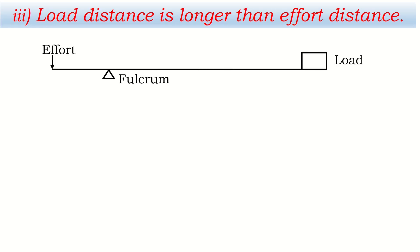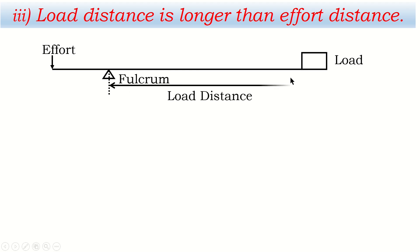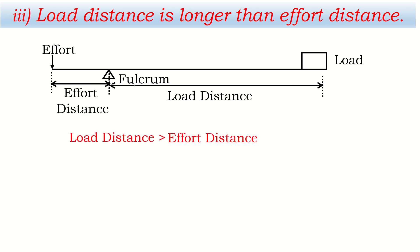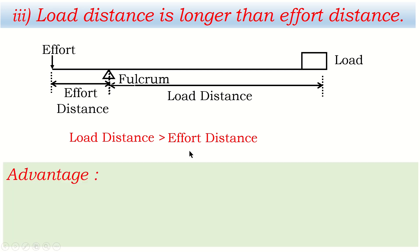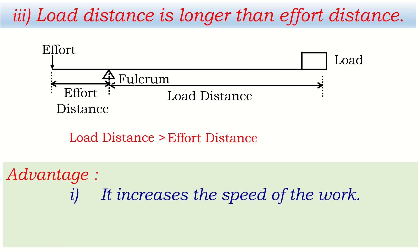The third condition of the first class lever is when load distance is longer than effort distance. If the fulcrum is taken near to the effort, the load distance becomes longer and effort distance becomes shorter. In this condition, the most important advantage is that it increases the speed of the work.